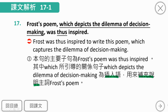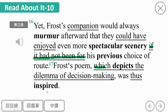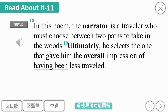'decision-making'是做决定这件事情，是名词加动名词的复合名词用法，类似的还有sightseeing、windsurfing等。thus是副词，放在be动词加PP之间，即被动语态中间。接下来：In this poem, the narrator is a traveler who must choose between two paths to take in the woods. Ultimately, he selects the one that gave him the overall impression of having been less traveled.